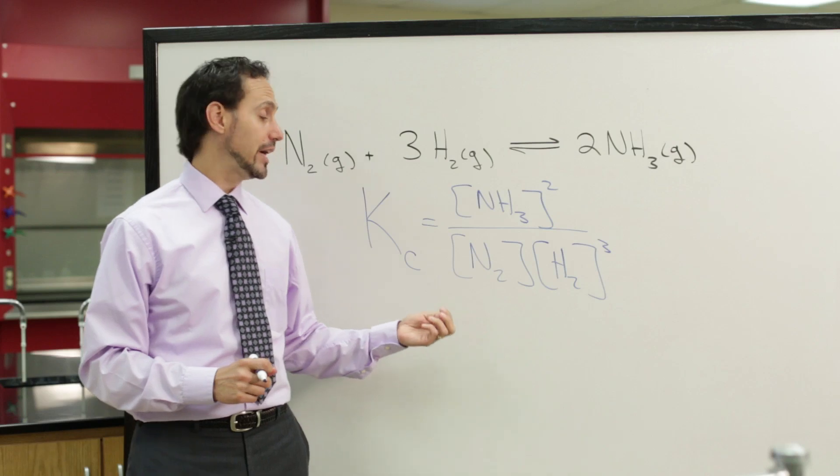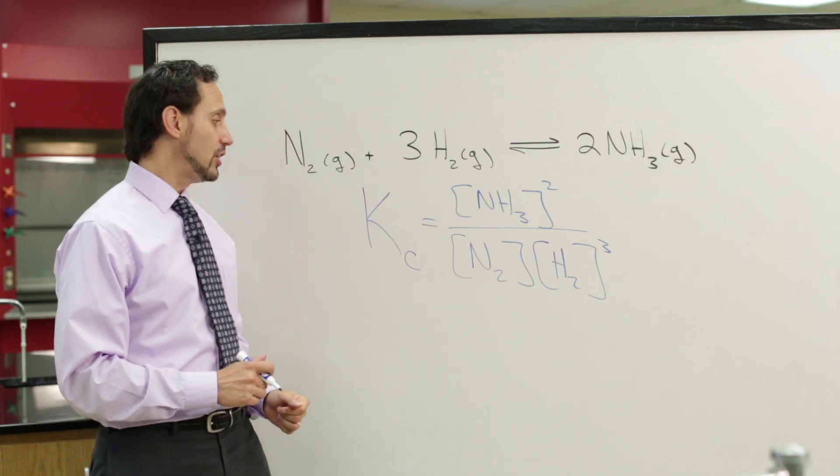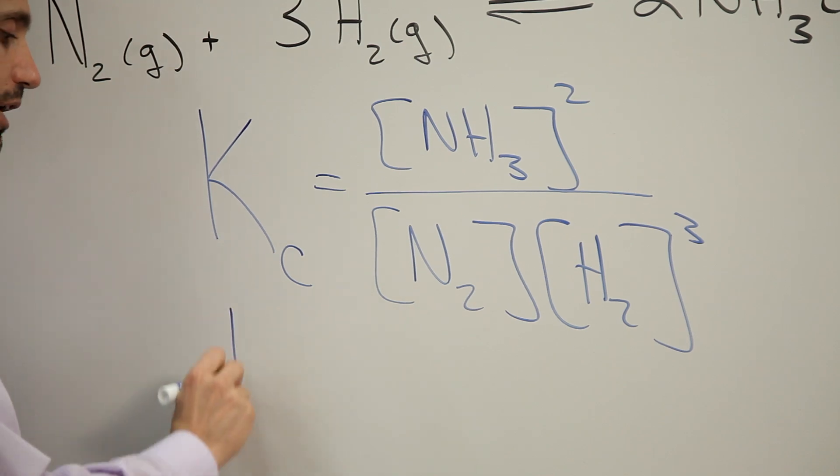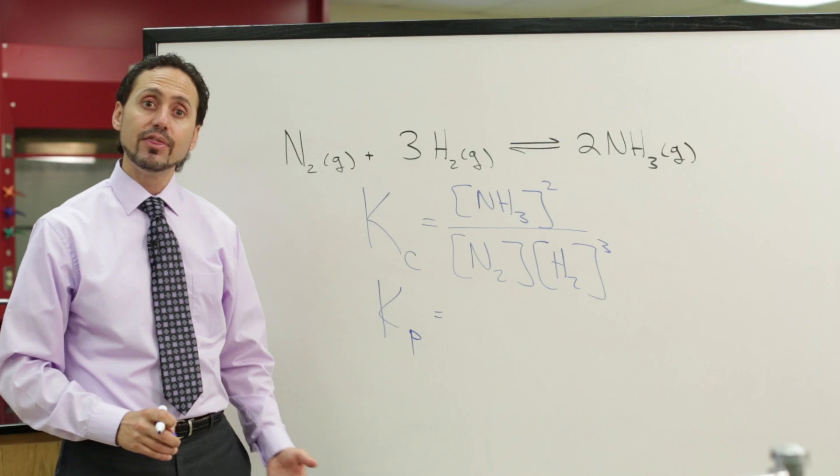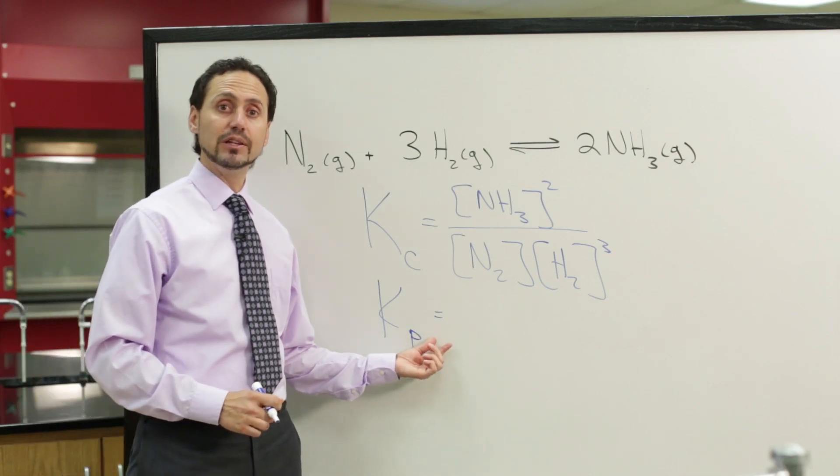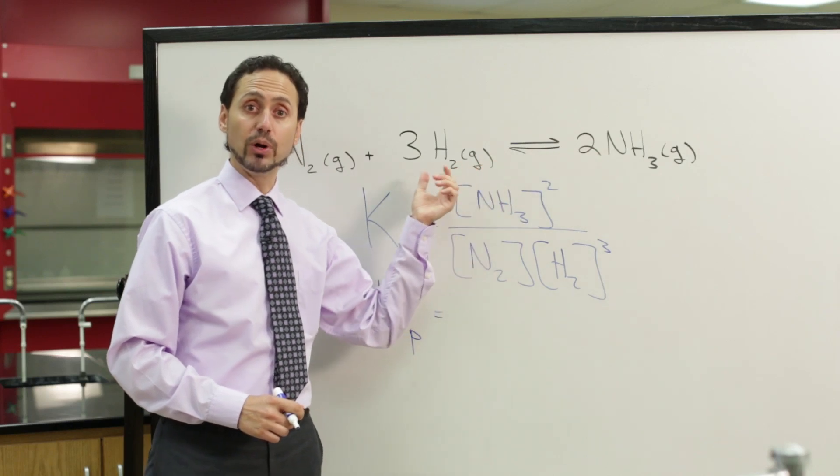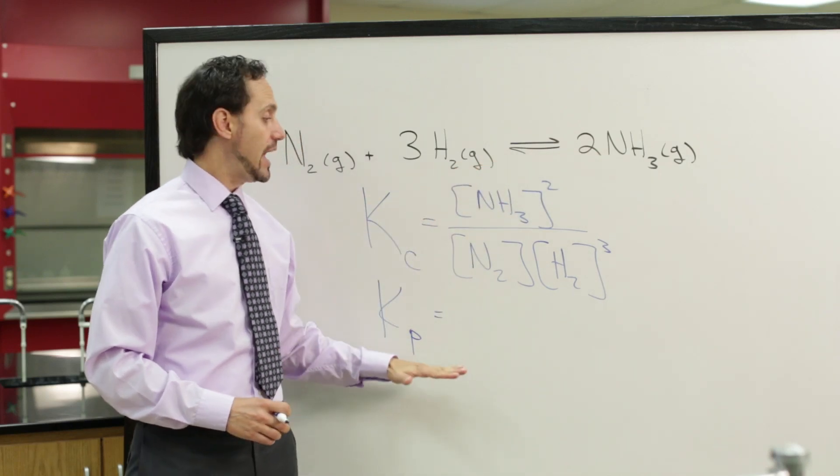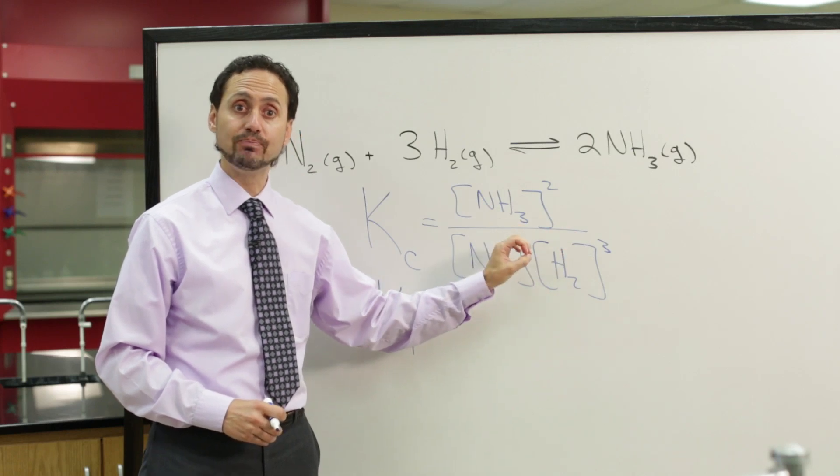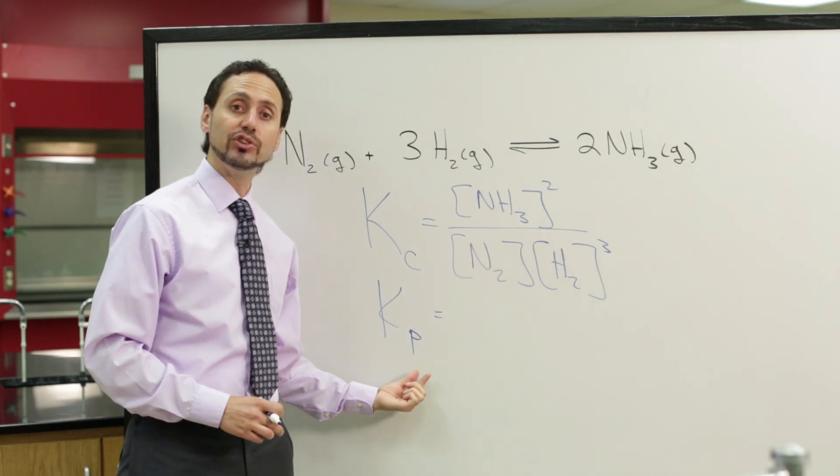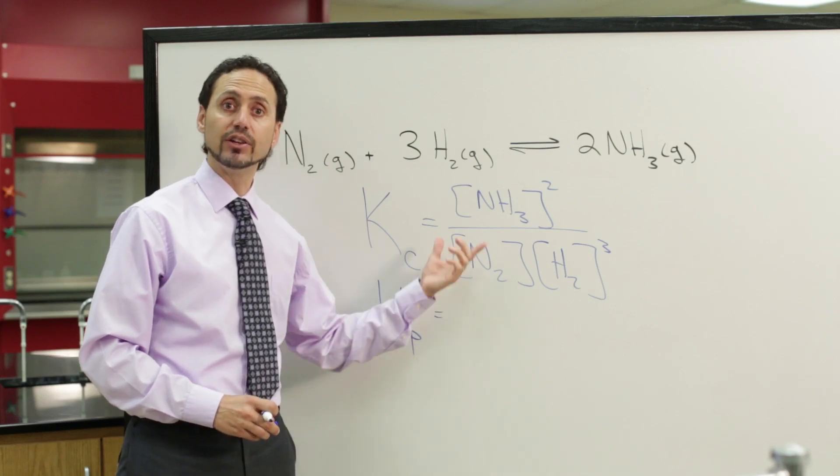So, instead of writing an equilibrium constant with a C, we could also write an equilibrium constant with a lowercase letter P. That lowercase letter P means that we can calculate the partial pressures of the products and reactants. And the form of the equilibrium constant expression will be the same. The only difference is that we'll be using the partial pressures of the products and reactants instead of the concentrations.